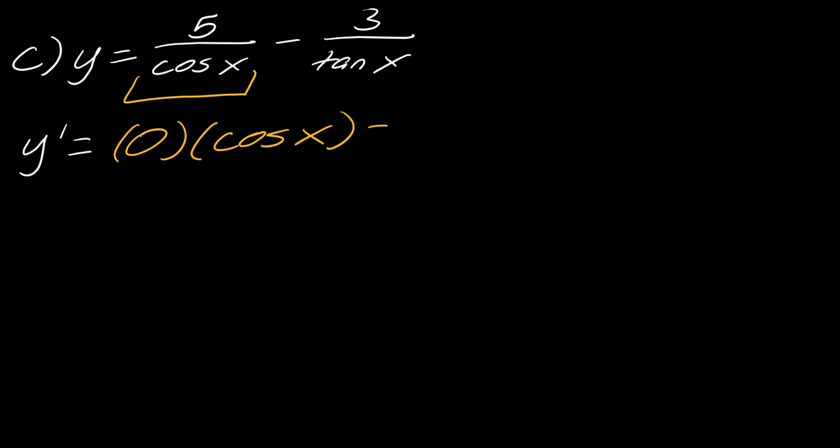And then I'll subtract from that. So I leave the five alone. And then the derivative of the cosine function is going to be negative sine. So all of this is over cosine squared x, there's the first part.